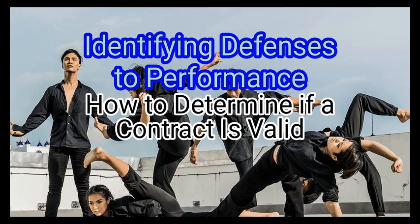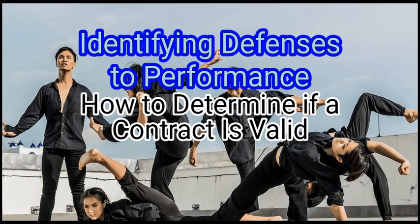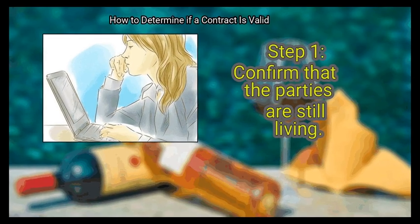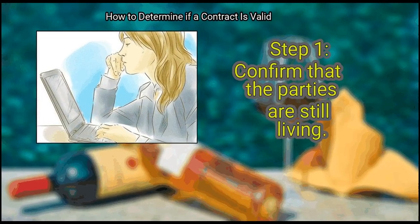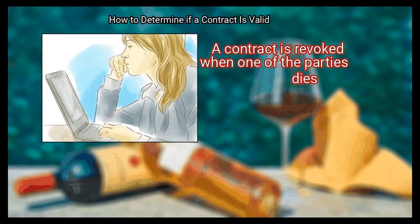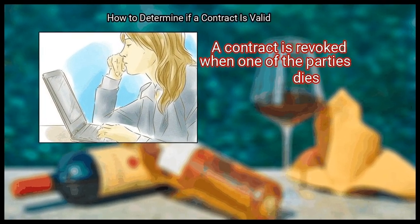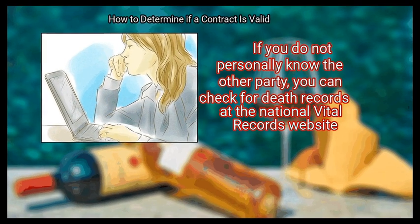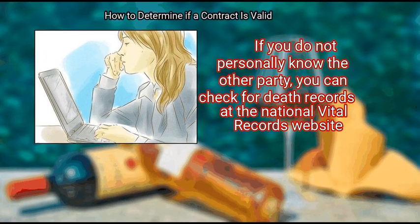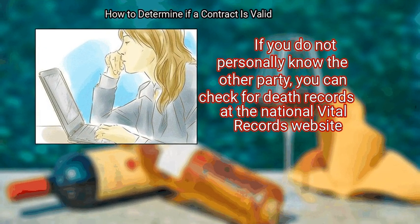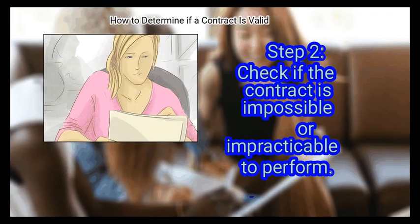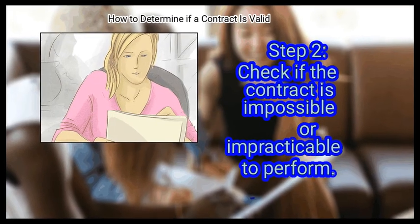Method 4: Identifying defenses to performance. First, confirm that the parties are still living. A contract is revoked when one of the parties dies. If you do not personally know the other party, you can check for death records at the National Vital Records website.